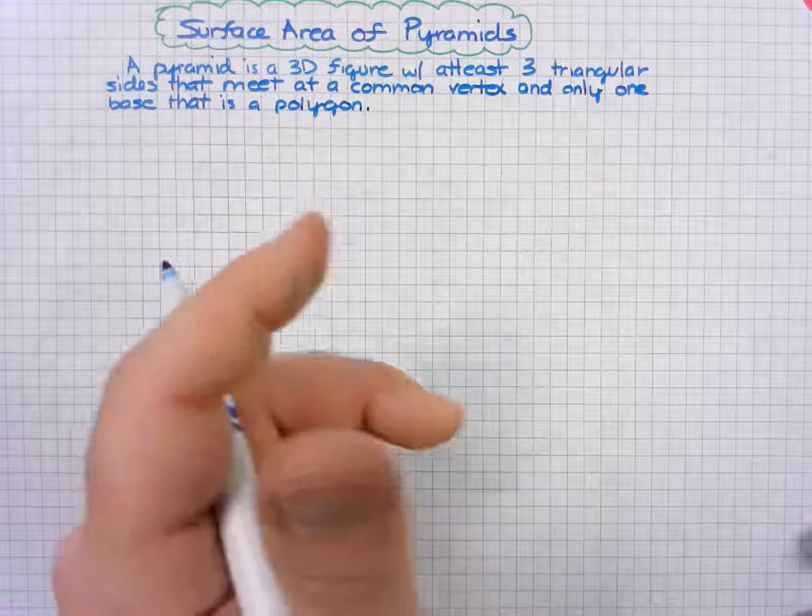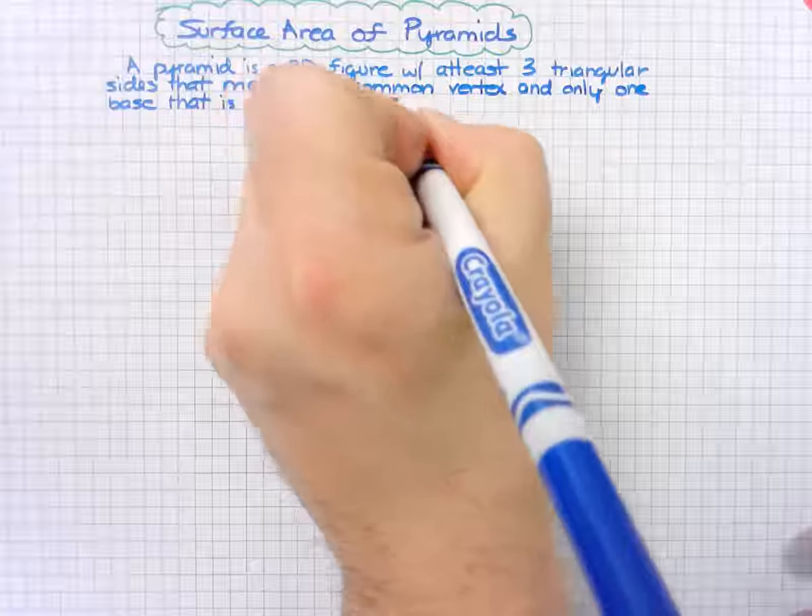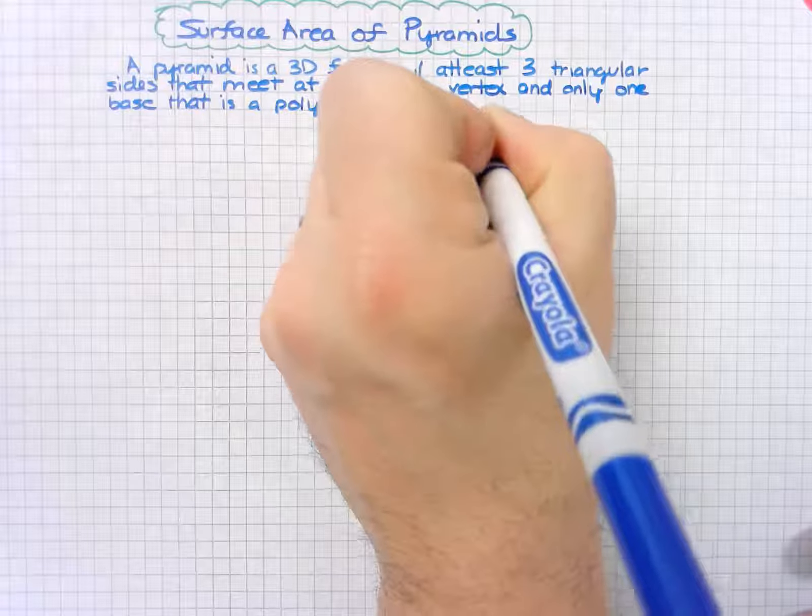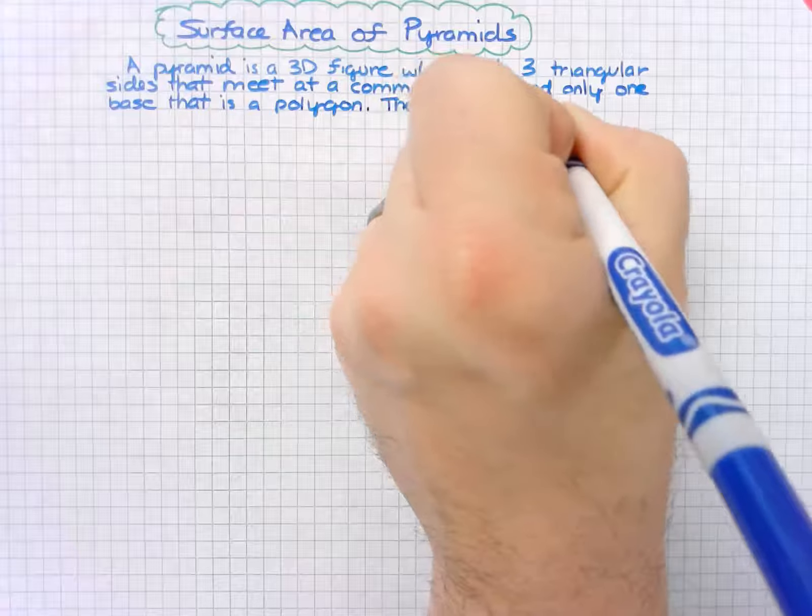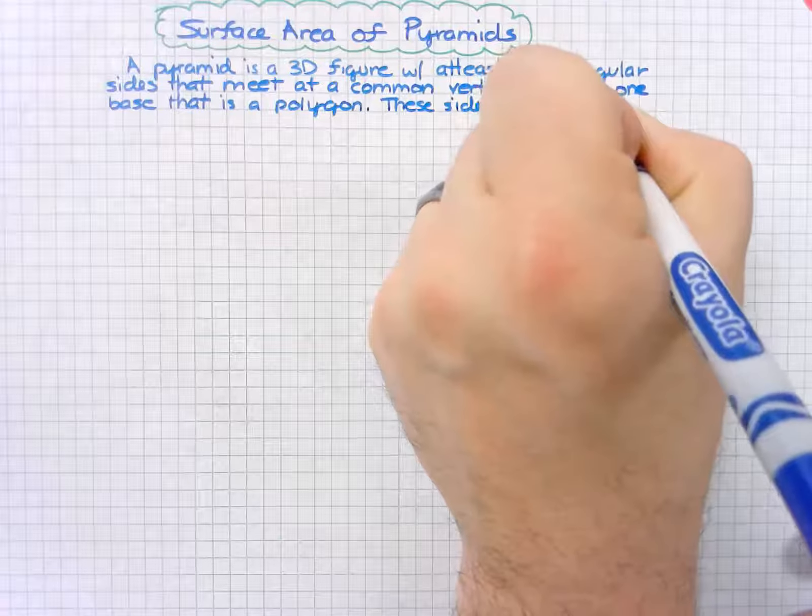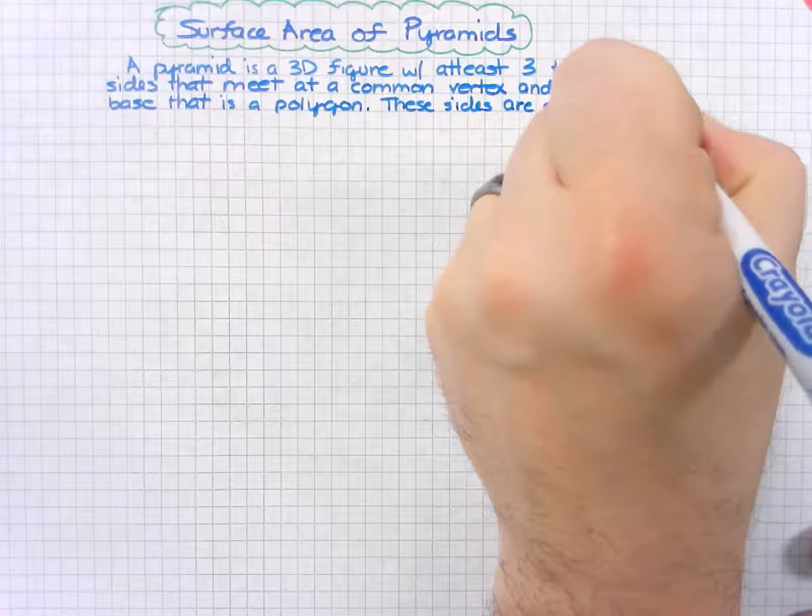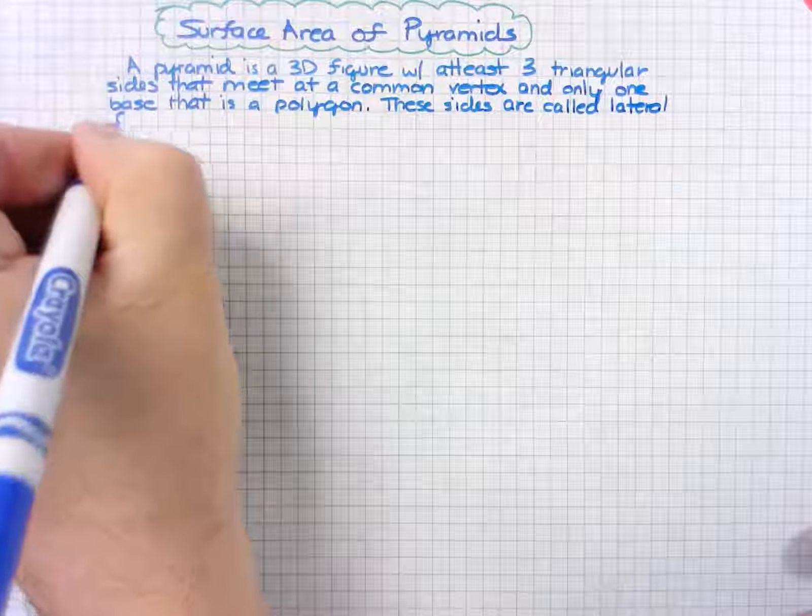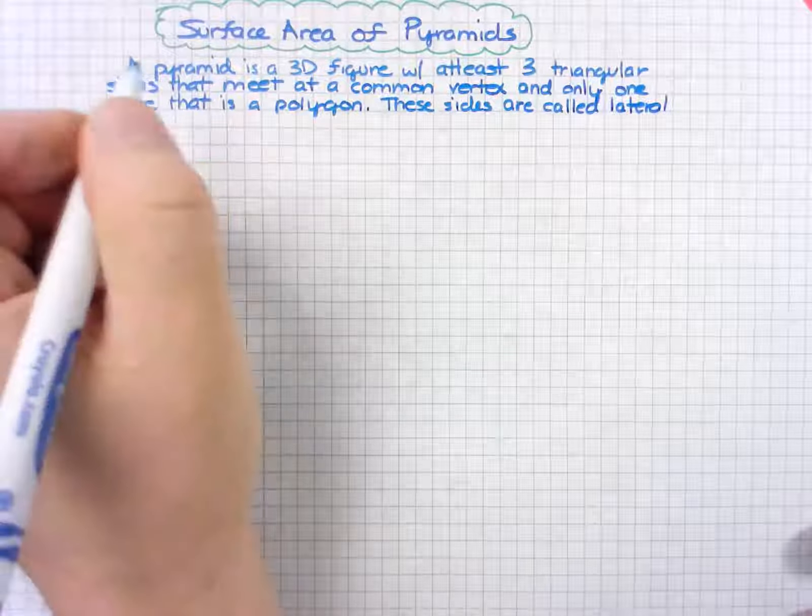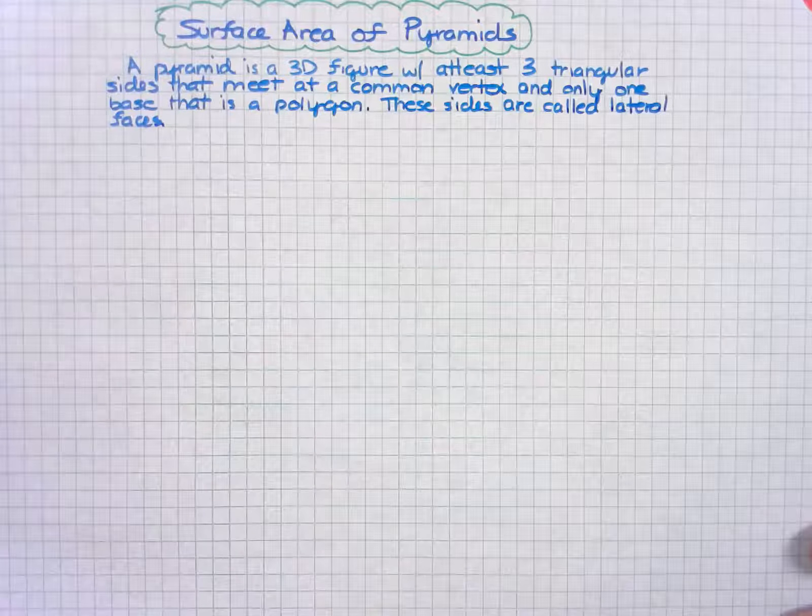These sides are called lateral faces. The slant height is the height of each lateral face.